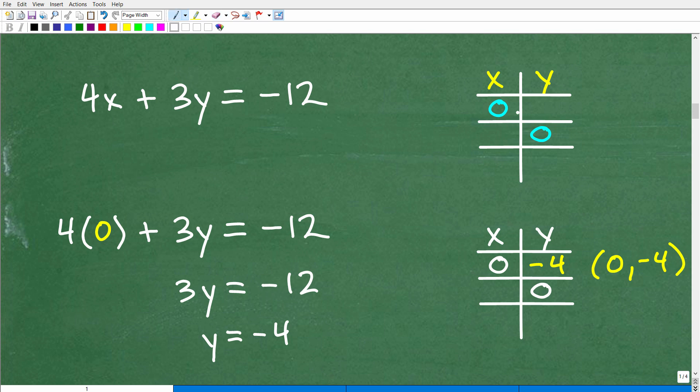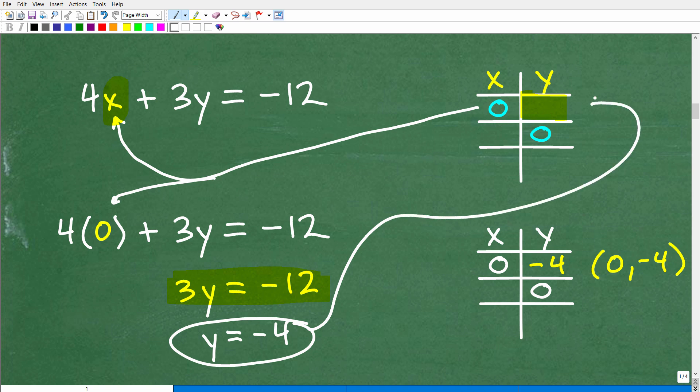So let's go ahead and first start off by figuring out what Y is equal to when X is equal to 0. All we need to do is plop in a 0 for X. So 4 times 0 is 0. That means I'm left with this equation: 3Y is equal to negative 12. Divide both sides by 3. I get Y is equal to negative 4. So I'm going to plug in a negative 4 right there.